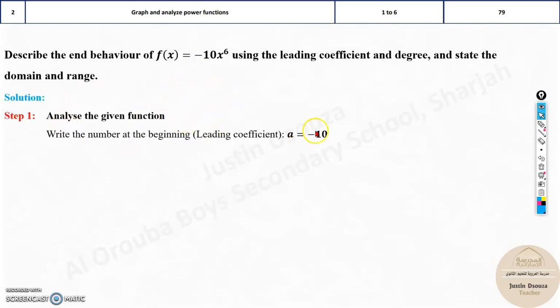Now we will analyze the given function. The leading coefficient is minus 10. Don't forget the negative symbol as well. And then the sign of this is negative. And then the degree, that is the highest power, is 6. Now this is even.